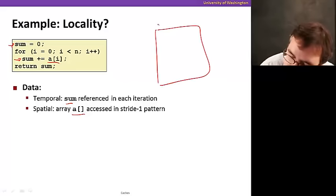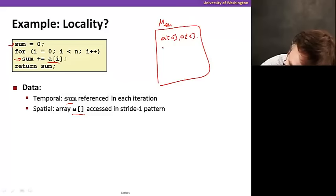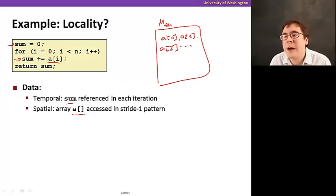We also have spatial locality because we're accessing array a and all of its elements. So if you have memory here, we're going to have your a of 0, and then right next to it, you're going to have a of 1, and then we're going to have a of 2, and so on. They're all nearby in memory. So since they're close by, we can take advantage of spatial locality.